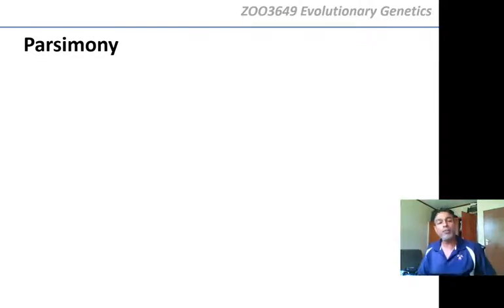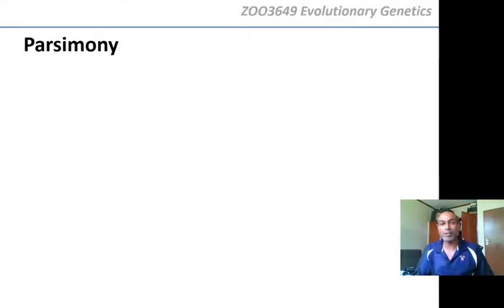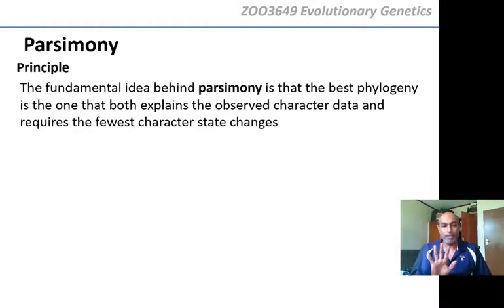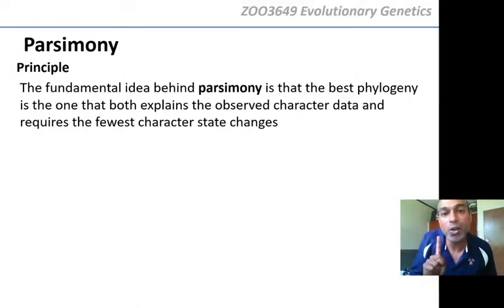That brings us to the very first method of tree reconstruction — parsimony. This is the easiest method, and in fact it is the method we used when we built the tree for those lizards in the first lecture of this section, although I didn't tell you we were using parsimony at the time. The principle is very simple: the best tree is the one that explains the character data with the fewest changes in character state.